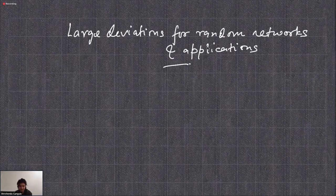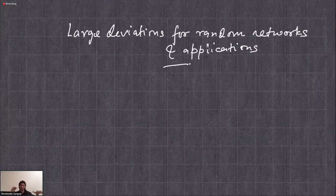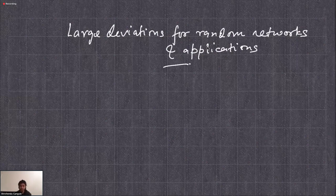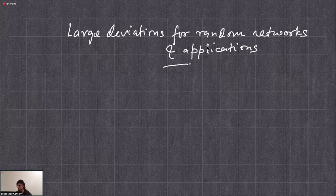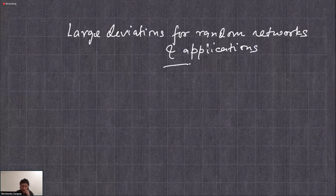What I'll talk about is a topic that has seen a lot of activity recently, having to do with large deviations for some canonical nonlinear functions of independent random variables. I'll try to give a broad overview of some of the progress, including some of my own work. I'm also typing up some lecture notes — they'll have a superset of what I'll talk about today and over the next few lectures. So: large deviations for random networks and applications.